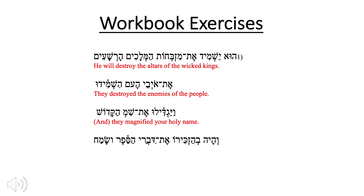Number seven begins with a vav consecutive, which changes the tense of this particular verb. It's an imperfect, but we translate it as a perfect — as though it's past tense. 'They magnified' — third masculine plural Hiphil. You see the hirik yod with the dalet, as well as the patah under the yod, and then the shuruq at the end. The yod and the shuruq together tells us this is 3mp. We have the direct object marker et, and then shem, 'your name,' and then ha-qodesh, 'your holy name.' They magnified your holy name.